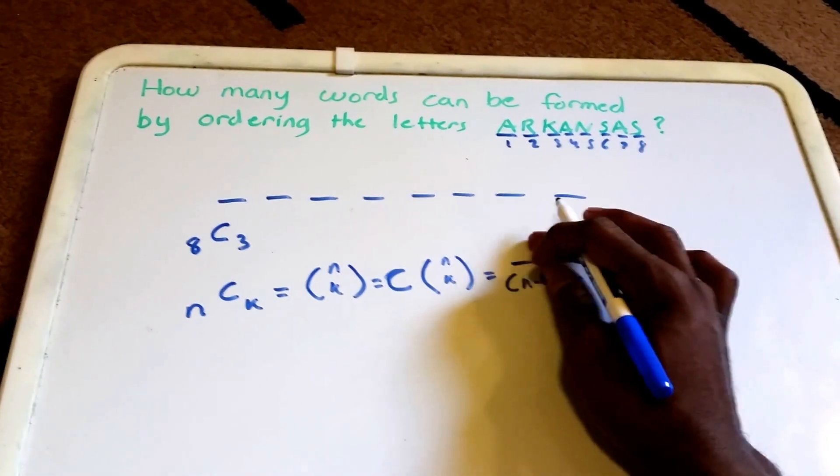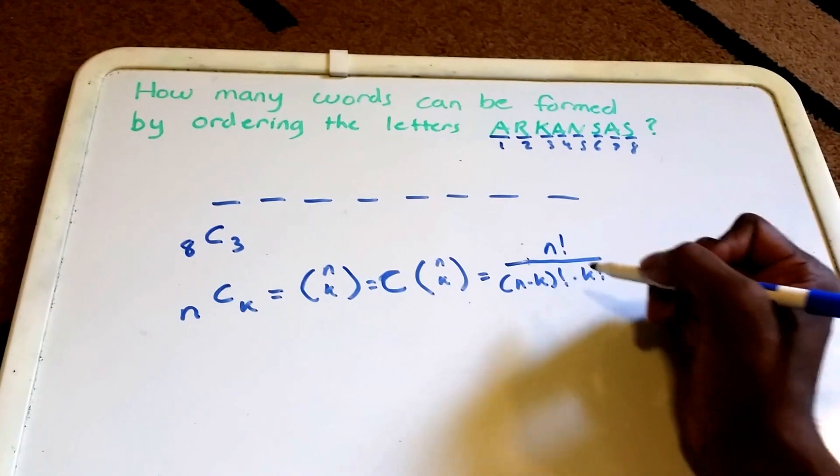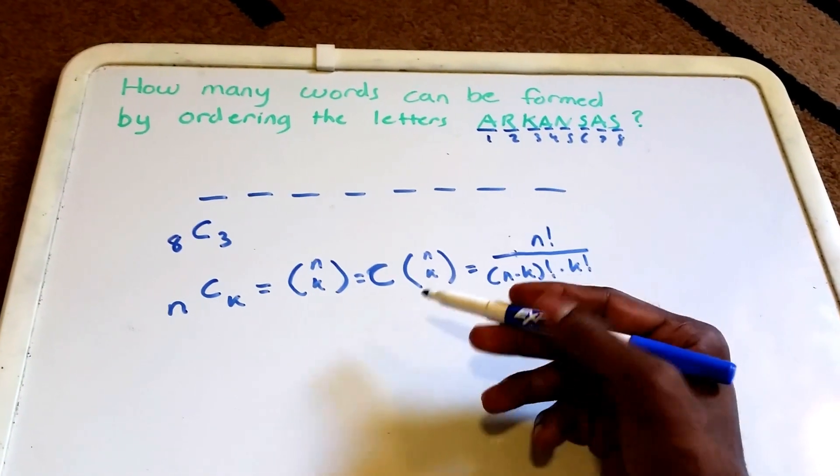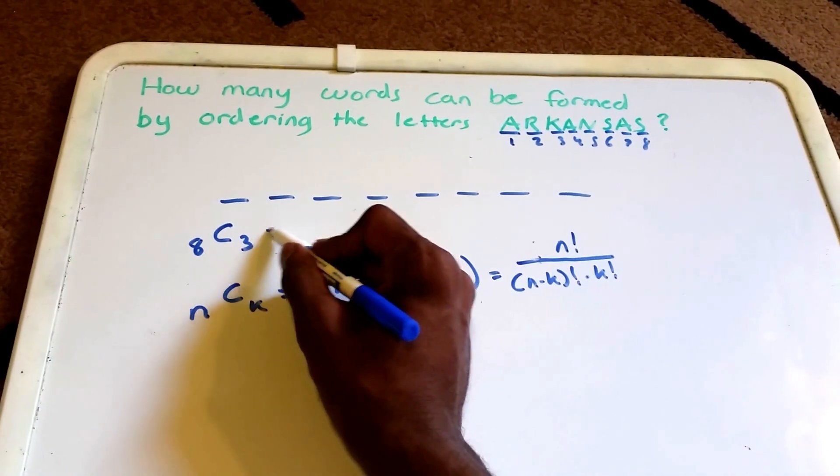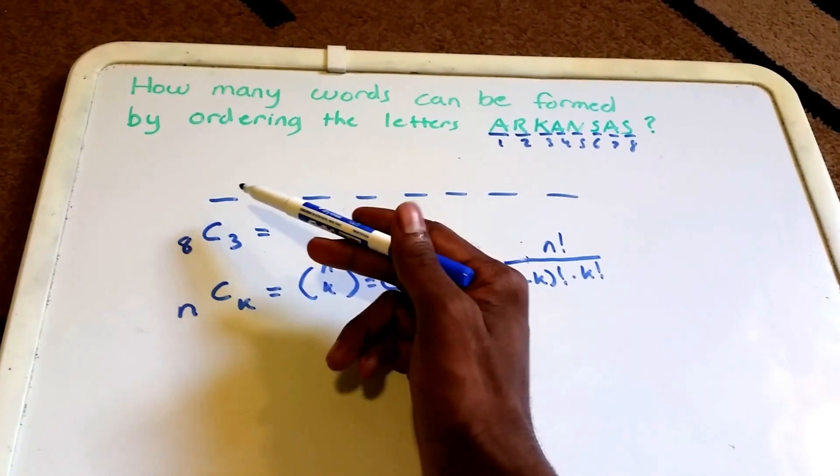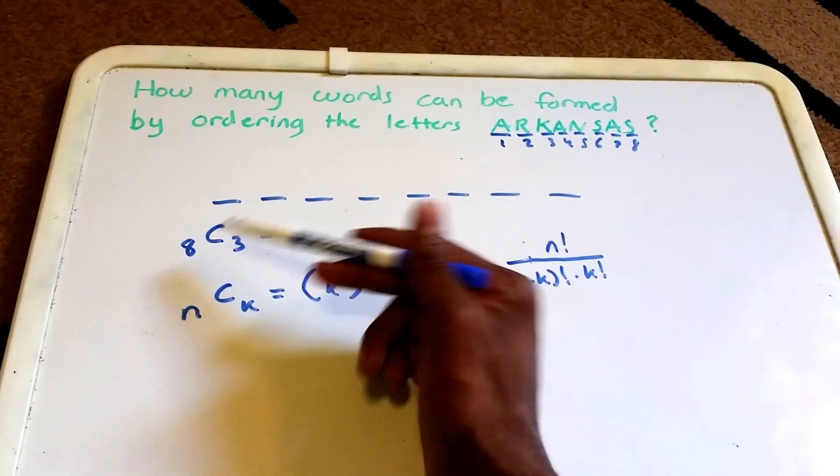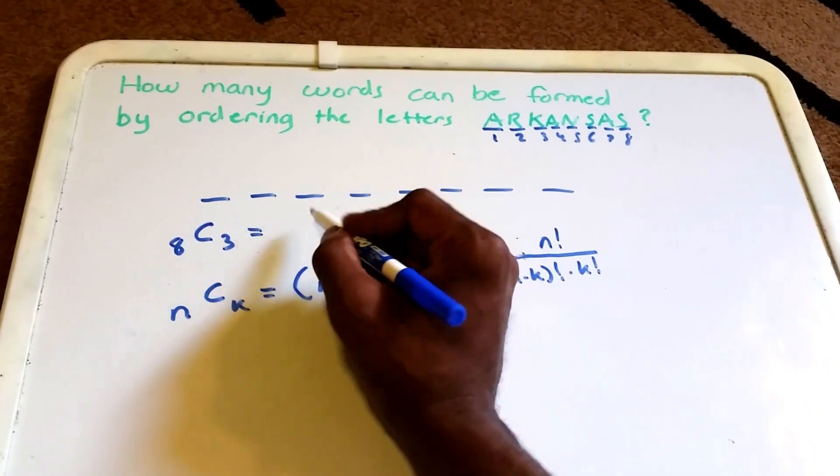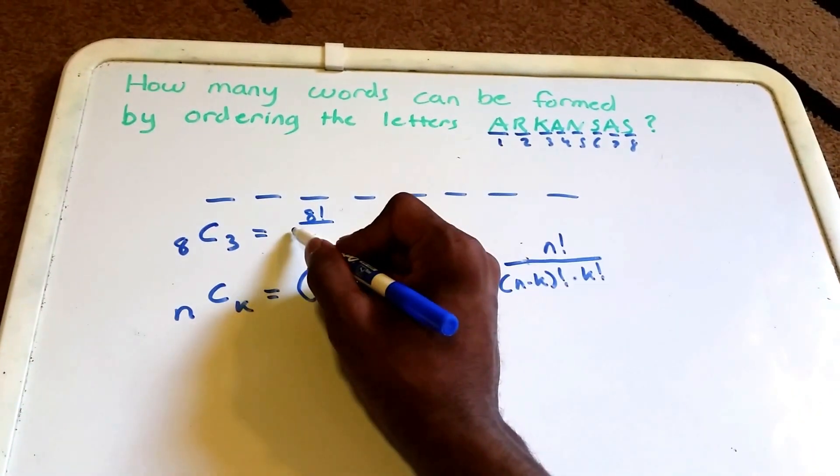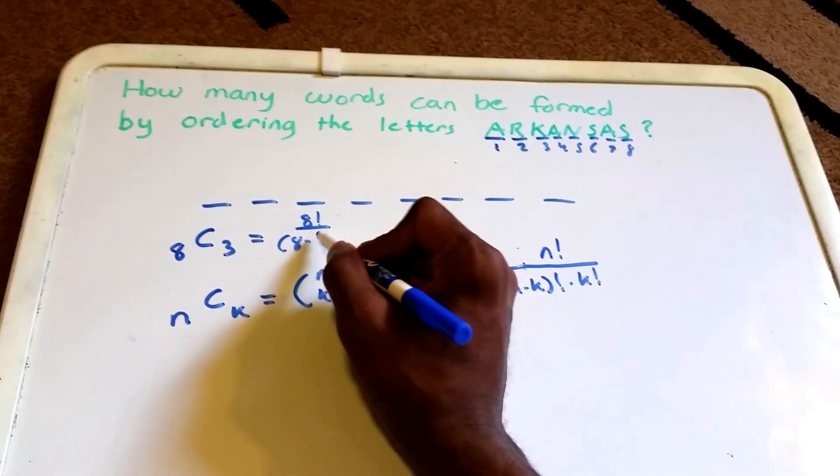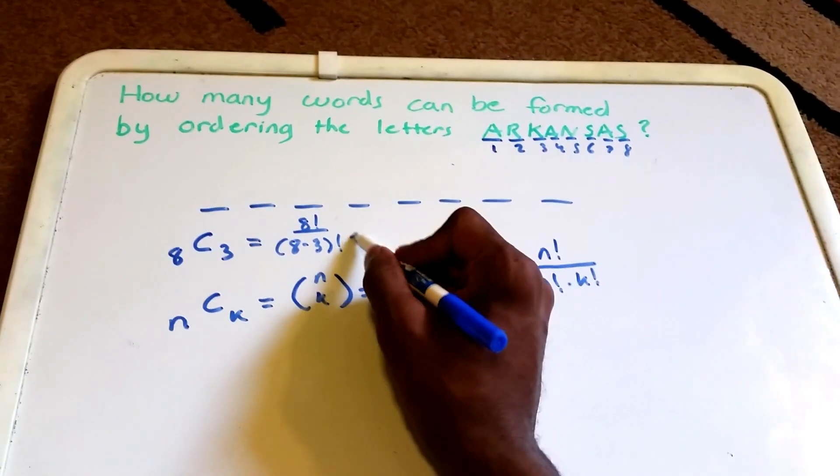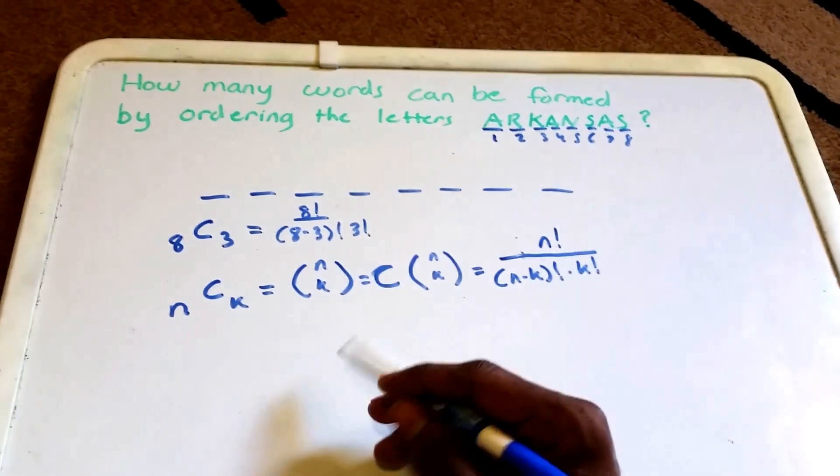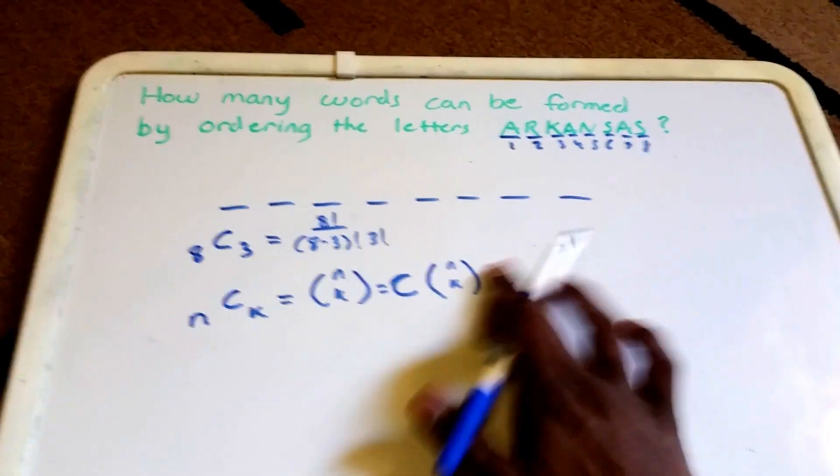Using this same formula here, what we get with 8 C 3, which is saying that we have a total of eight spots and we want to choose three of them, we get 8 factorial over 8 minus 3 factorial times 3 factorial. Let me erase the formula here.